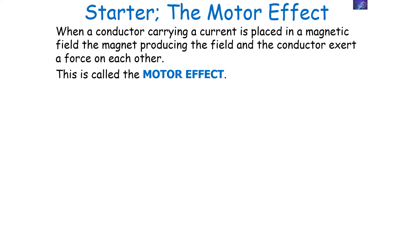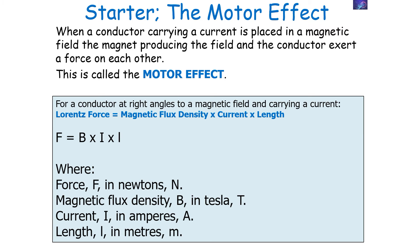When a conductor carrying a current is placed in the magnetic field, the magnet and the conductor exert a force on each other — we call this the motor effect. For a conductor at right angles to a magnetic field and carrying a current, the magnetic force F is equal to the magnetic flux density B, times the current through the wire I, times the length of the wire in the magnetic field L. Force is given in newtons, magnetic flux density in teslas, current in amps, and length in metres.